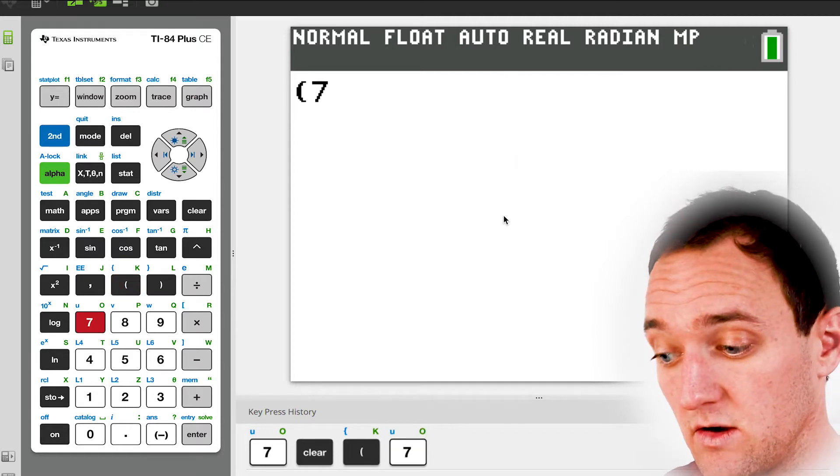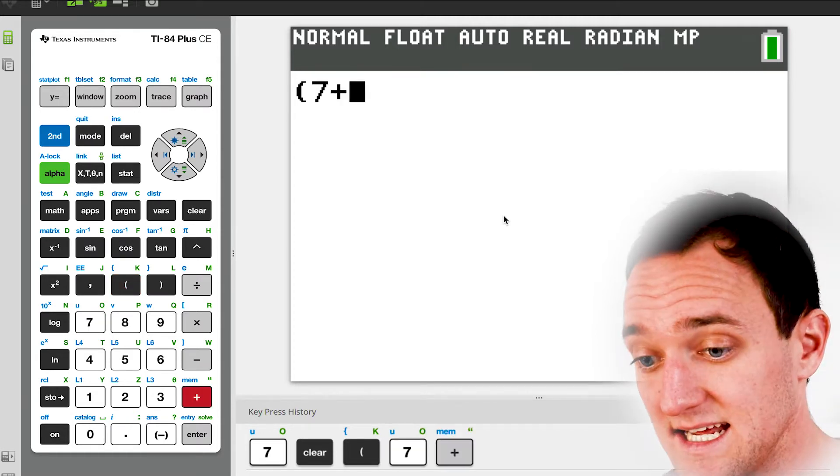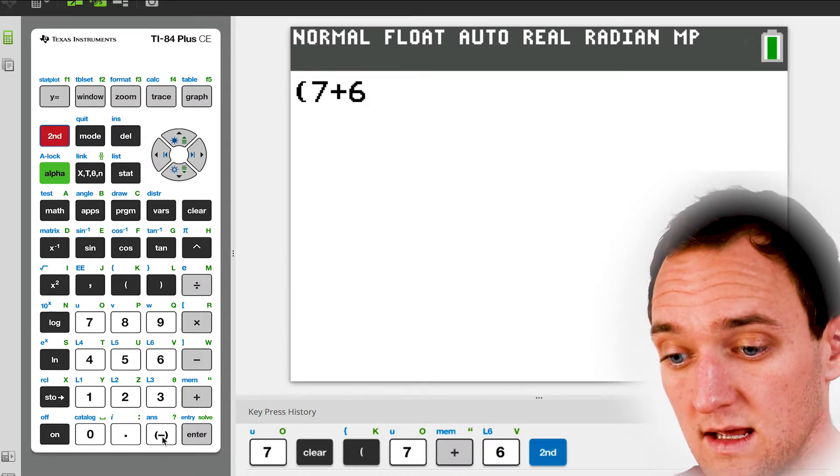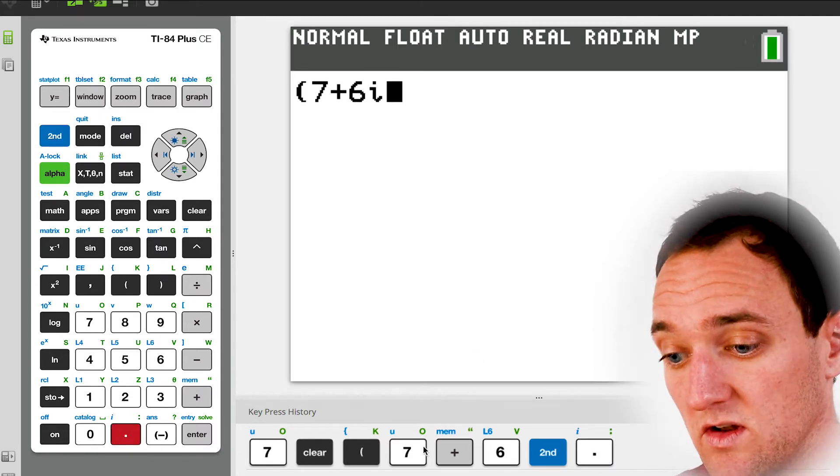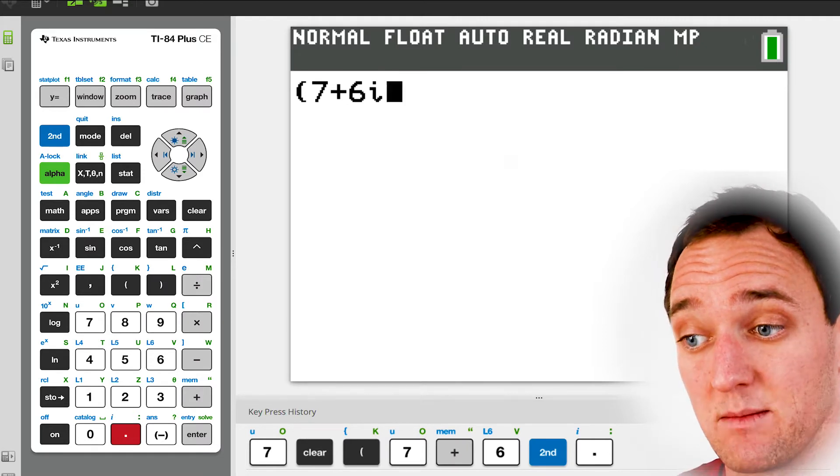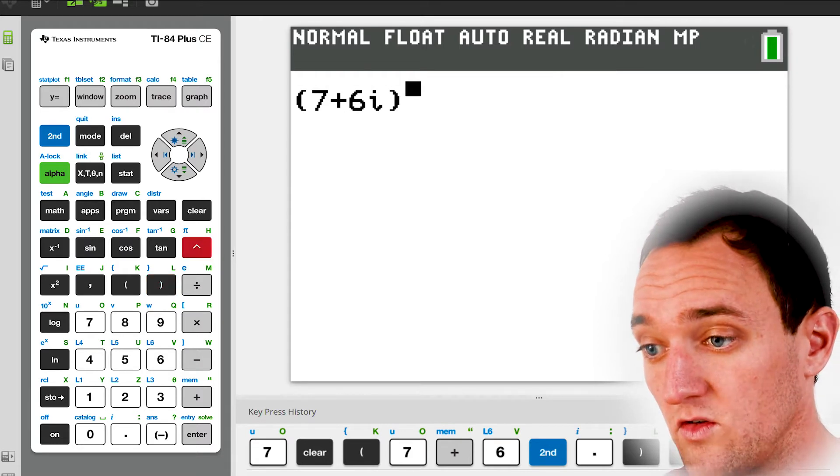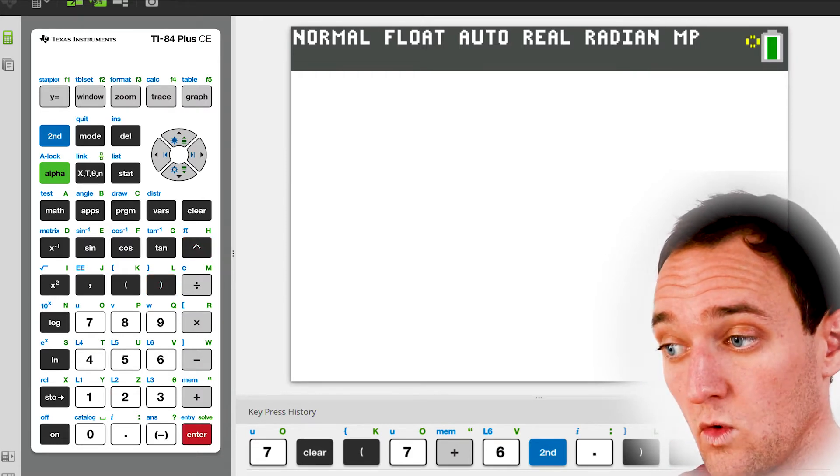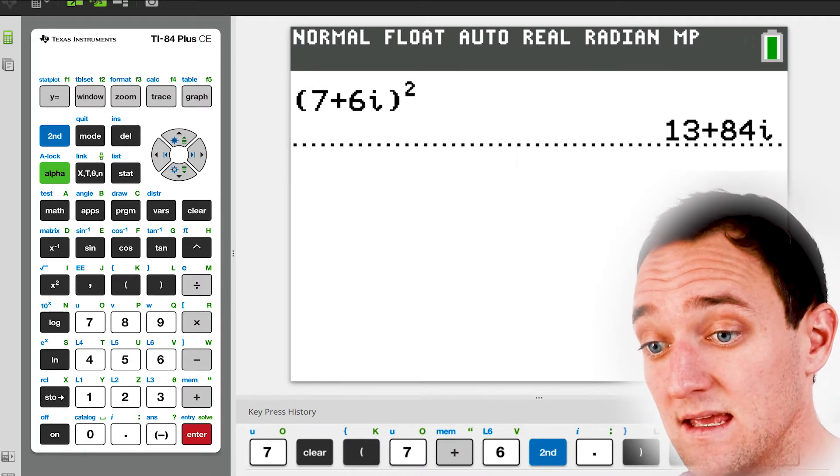So all I'm going to do is actually just put that right in my calculator. I need to do those parentheses. Never forget those. And we're going to talk more about those parentheses as we go along. But 7 plus 6. Now here's that i button. It's second and then down here near the period. That's i, right? And you can see if you want to follow along down at the bottom of my screen here, you can see all the keys that I'm pressing. I want to close that parentheses off. Now I want to put a little squared here. And then if I hit enter,